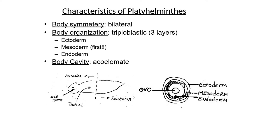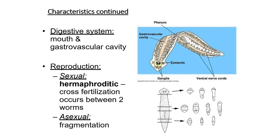In Planaria, the anterior portion consists of eye spots. The dorsal part is pointed and the posterior part is also pointed. The mouth and gastrovascular cavity are present. Pharynx dikhe hai, eye spots dikhe hain, aur ganglia bhi dikhe hain. Popar se is Planaria ko agar aap dekhenge to ye portions isme pai jaate hain.